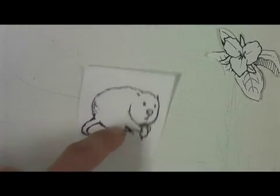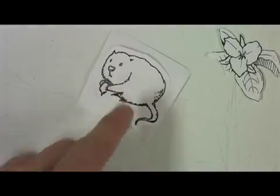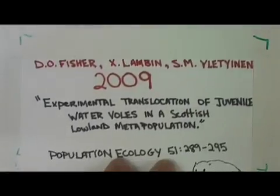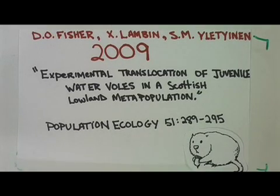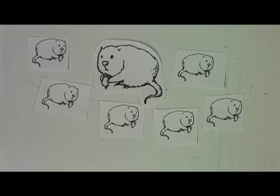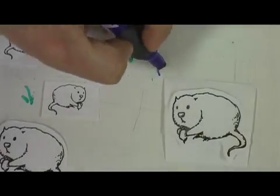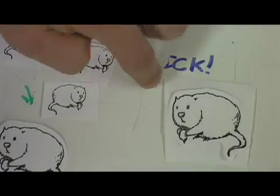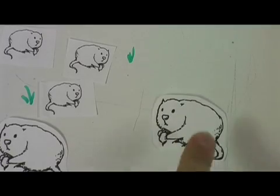Organisms differ in how they disperse, and those differences affect if and how metapopulations are structured. In an article by Fisher et al. in 2009, researchers found that dispersal — movement that is not directed — in water voles is affected by the surrounding population's density. Population density can either decrease or increase an organism's likelihood for settling in an area. It can decrease immigration by acting as a barrier, or social fence, or it can increase immigration through social attraction.